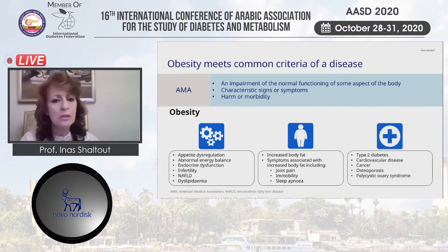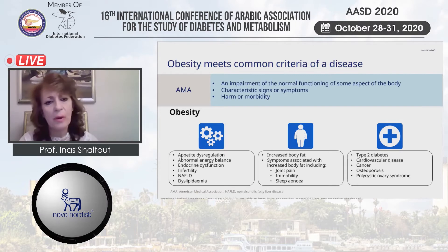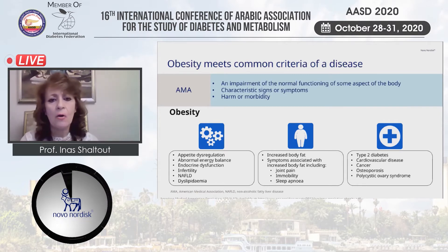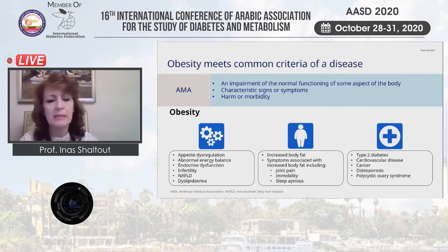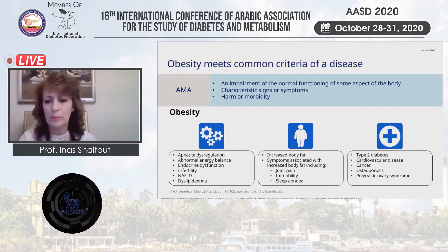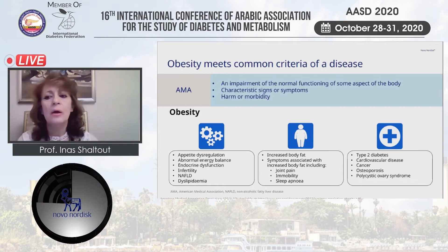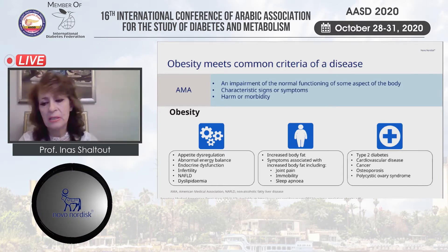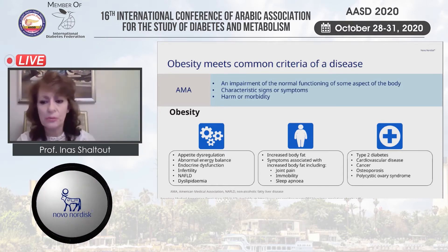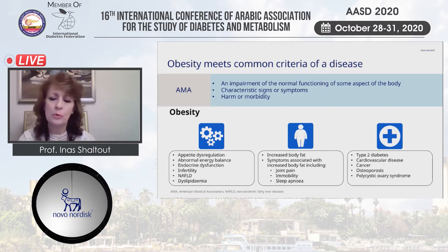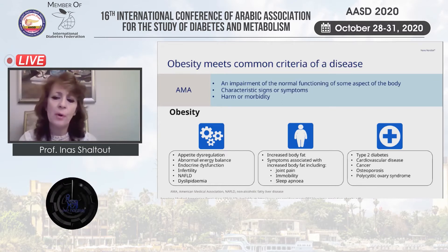Also, a disease is characterized by causing harm or morbidity, and this is again shown in obesity, which usually leads to type 2 diabetes, cardiovascular disease, cancer, osteoporosis, and polycystic ovary syndrome.